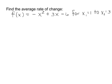For this problem, we're asked to find the average rate of change for the function f of x equals the opposite of x squared plus 3x minus 6, going from an x₁ of 1 to x₂ of 3.